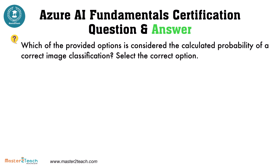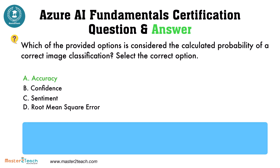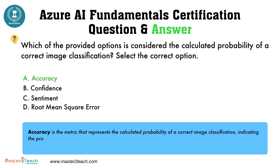Which of the provided options is considered the calculated probability of a correct image classification? The options are: A. Accuracy, B. Confidence, C. Sentiment, D. Root Mean Square Error. The correct answer is Accuracy. Accuracy is the metric that represents the calculated probability of a correct image classification, indicating the proportion of true results — both true positives and true negatives — among the total number of cases examined.